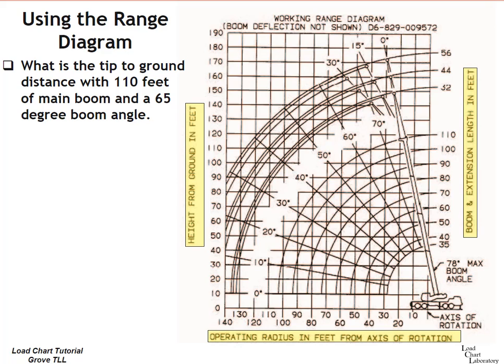Another example, and this one will show some of the gray area that you might encounter when you're using a range diagram. What is the tip to ground distance with 110 feet of main boom and a 65 degree boom angle? Just like before, find the arc for 110 feet of main boom. 110 feet of main boom, there's the arc to follow. But we're not dealing with radius this time. We're dealing with boom angle. And we have diagonal lines representing boom angle.